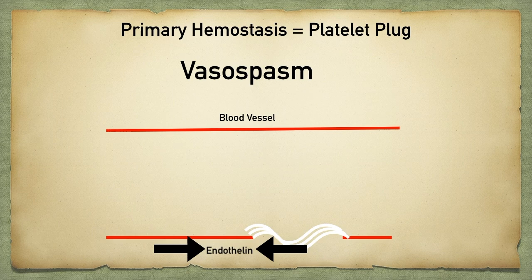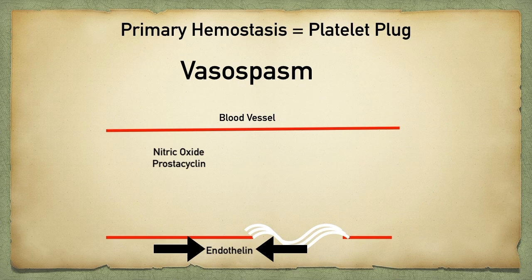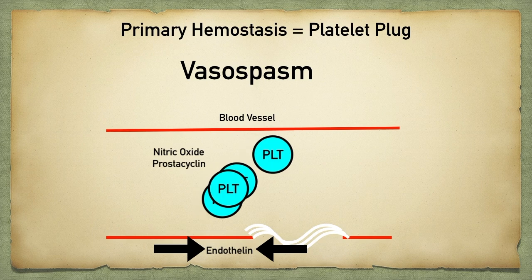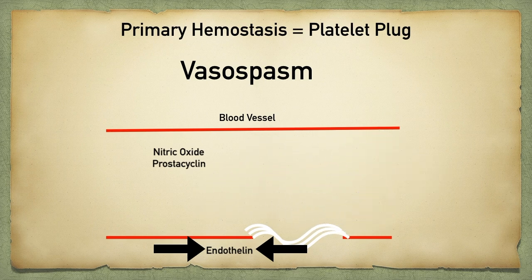Normal healthy endothelial cells release hormones called nitric oxide and prostacyclin. These hormones normally relax the blood vessel, and they inactivate platelets from binding to the inner lining of a blood vessel. So platelets are able to travel through that intravascular space without getting caught up, which is what we normally want in a healthy blood vessel. We don't want the platelets to clot off or thrombose the blood vessel because that will lead to problems.